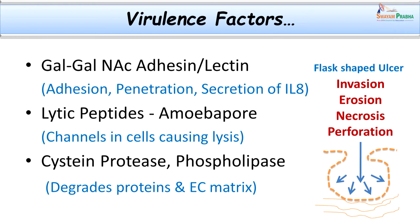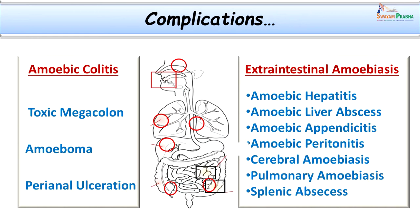Sometimes small ulcers can coalesce and form large ulcers. As a result of all these virulence factors, there is invasion, erosion, necrosis, and perforation. Organisms usually do not cross the muscularis layers and spread sideways, but sometimes they succeed in crossing and can perforate the peritoneum, entering different organs and even the thorax. This pathogenesis ultimately leads to production of shallow flask-shaped ulcers, which have a narrow neck or mouth with a broad base and undermining edges.